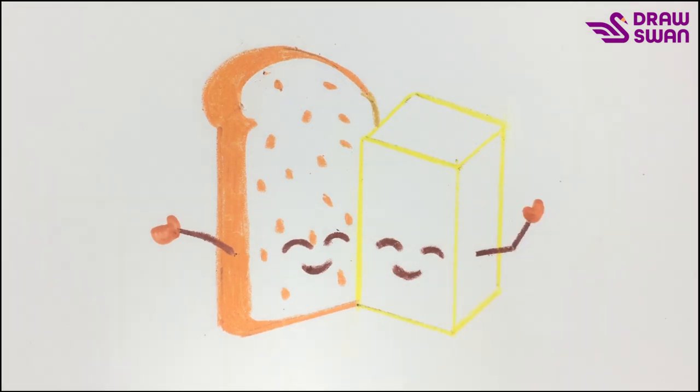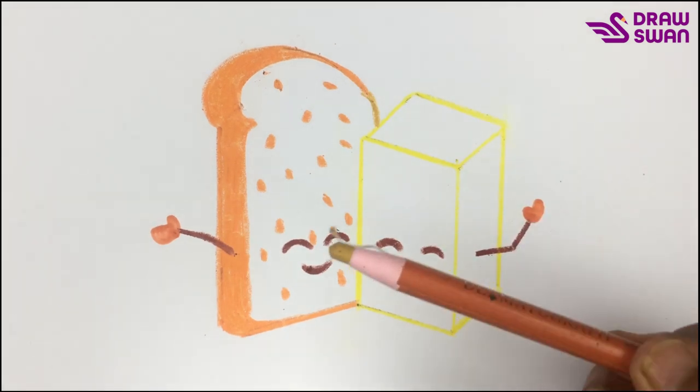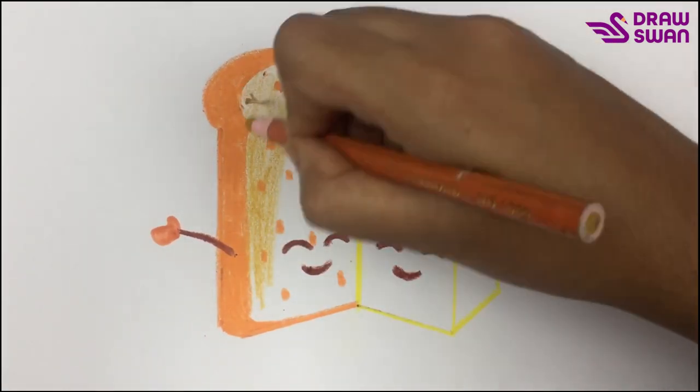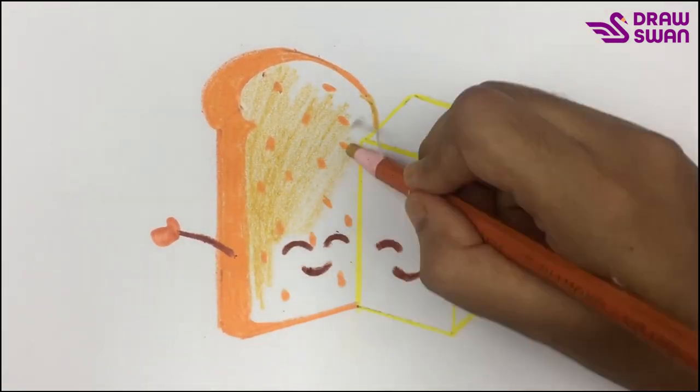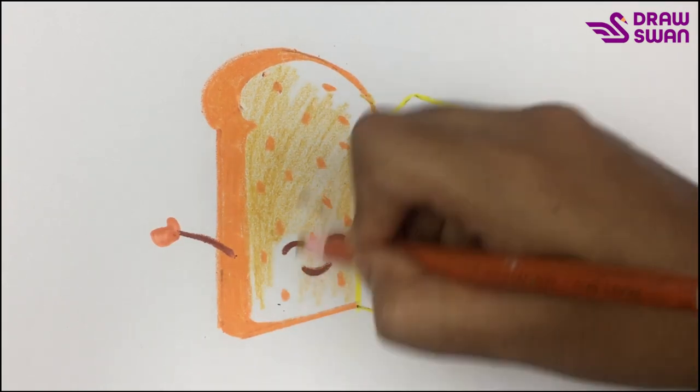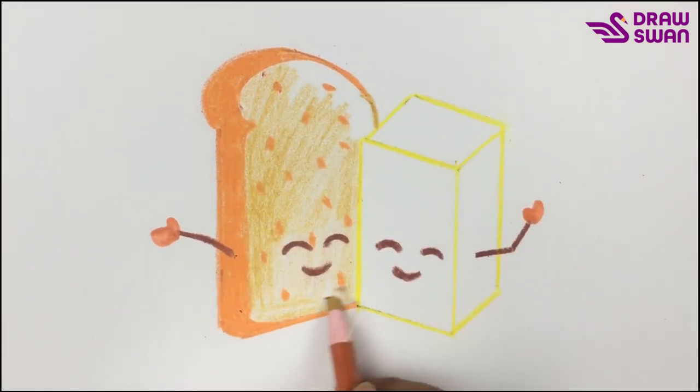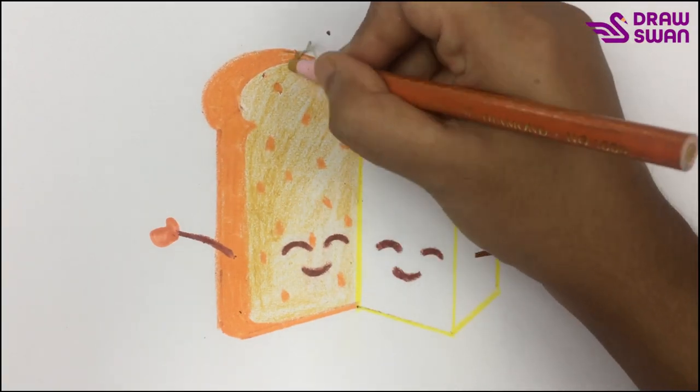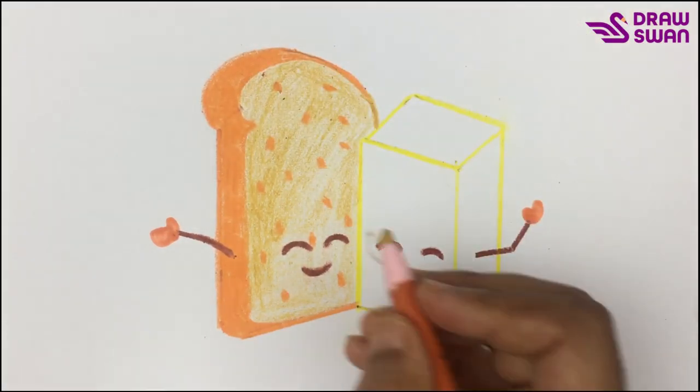To do the coloring inside it, I'm using a pale orange colored pencil. The lower section should be darker.